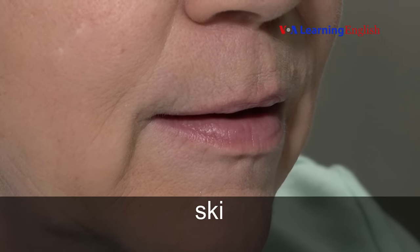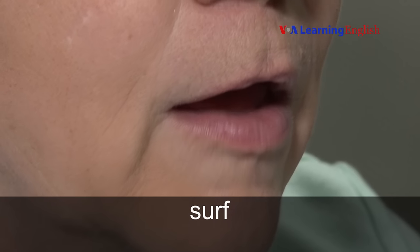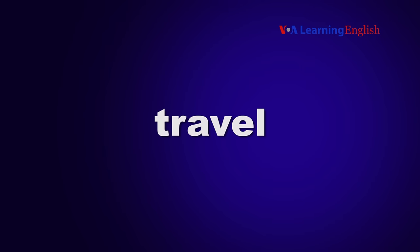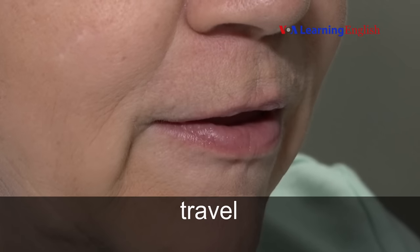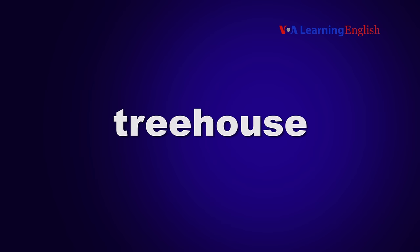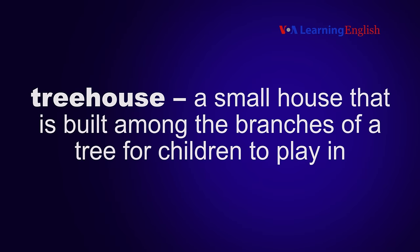Ski. To ski means to move or glide on a pair of long, narrow pieces of wood over snow or water. To surf means to ride on ocean waves using a special board called a surfboard. To travel means to go to a place that is far away. Treehouse. A treehouse is a small house that is built among the branches of a tree for children to play in.